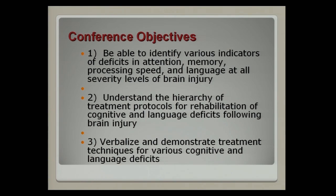So today we're going to be talking about the various indicators of the deficits of attention and memory, processing speed, and language at all severity levels of brain injury. I hope that you'll go away with an understanding of the hierarchy of treatment protocols for rehabilitation of both cognitive and language deficits following brain injury, and you'll even be able to verbalize and maybe demonstrate some of the treatment techniques for various cognitive and language deficits.